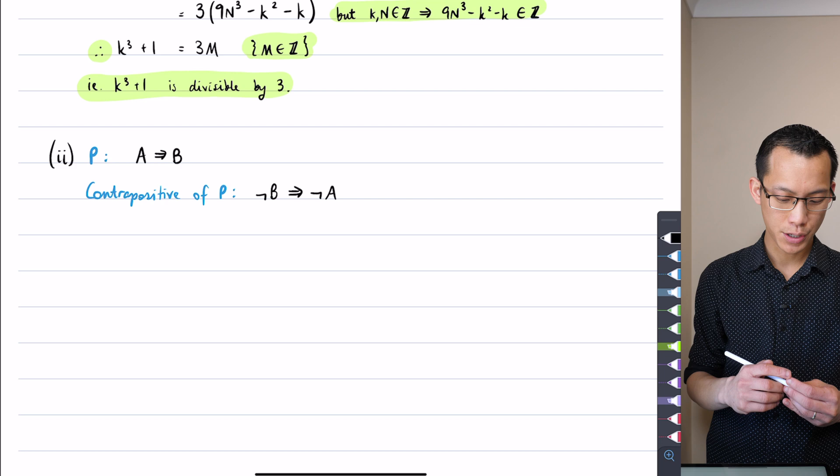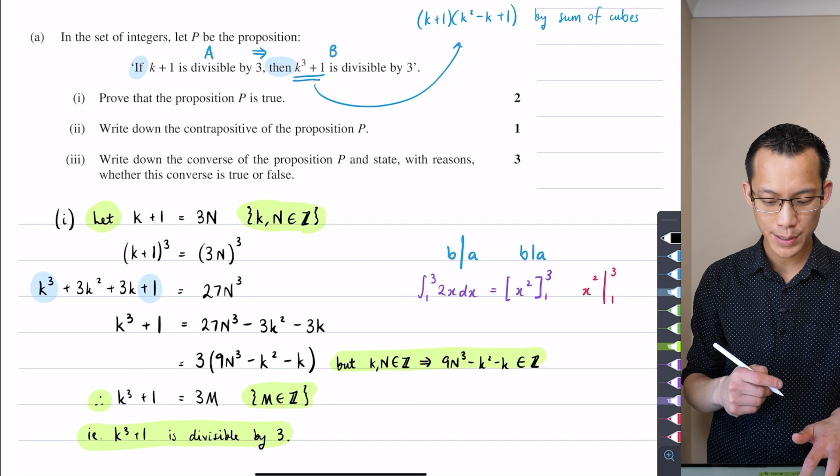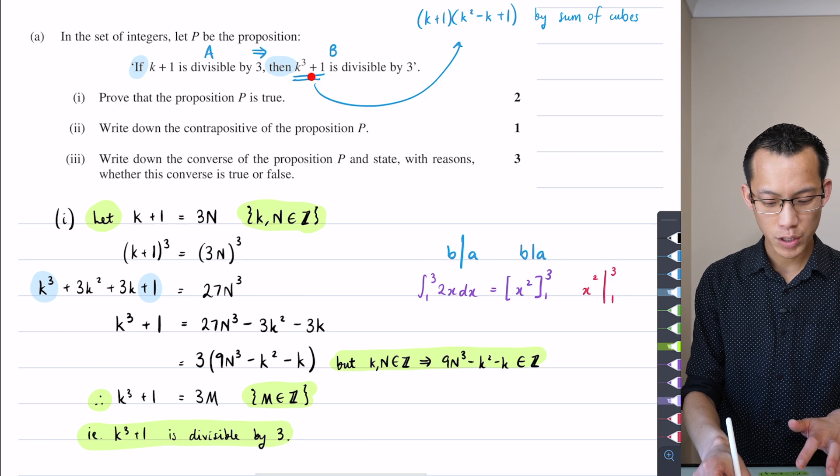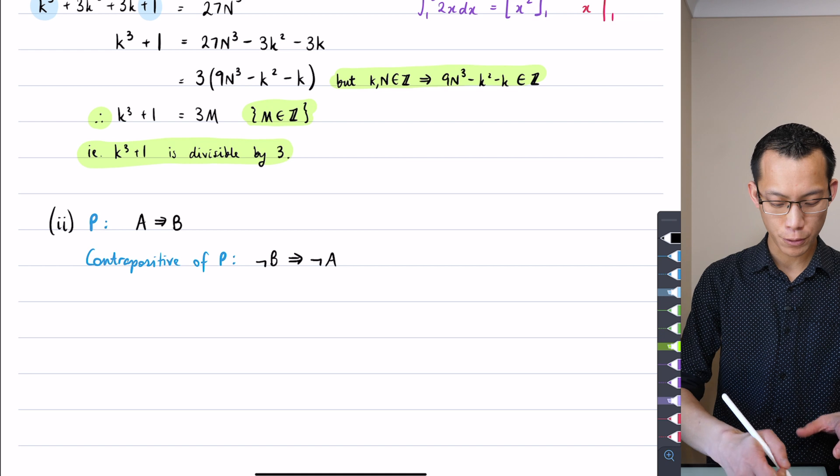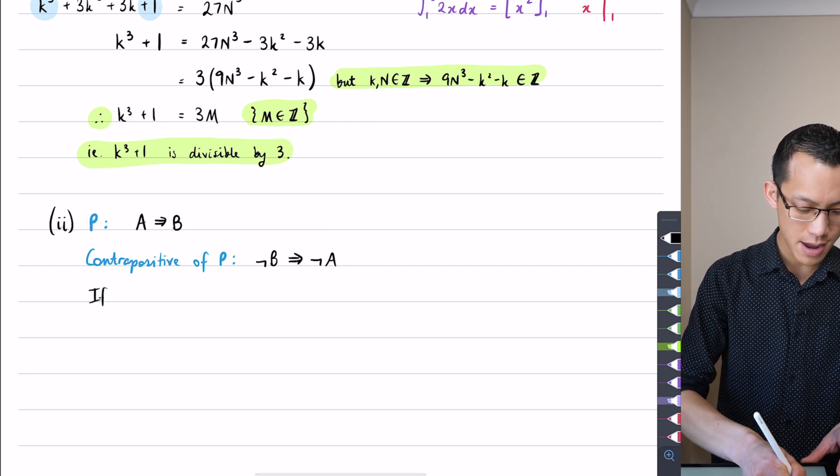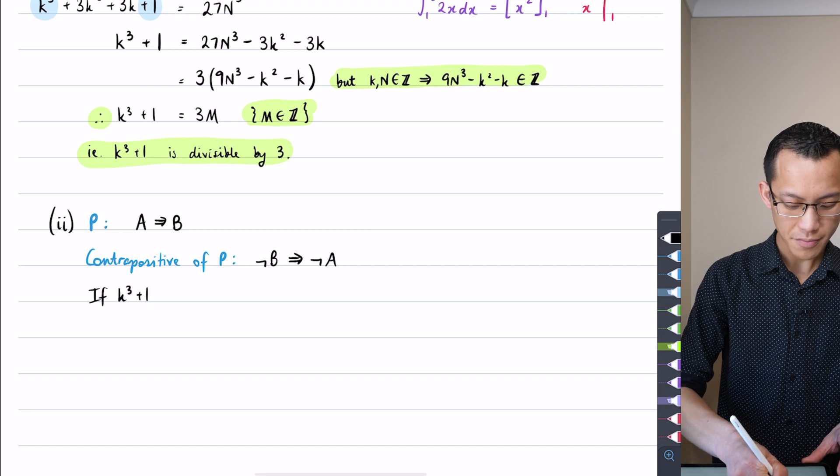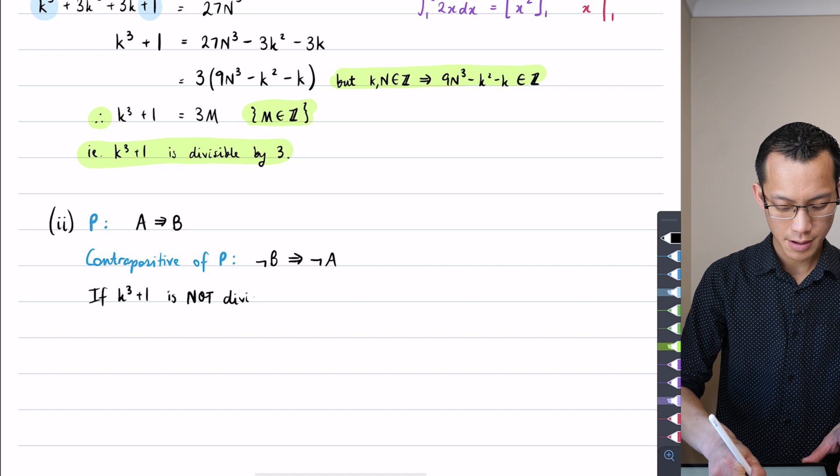I'm going to negate each statement and say them backwards. So here is B: k³+1 is divisible by 3. So the negation of B would be 'if k³+1 is not divisible by 3'.